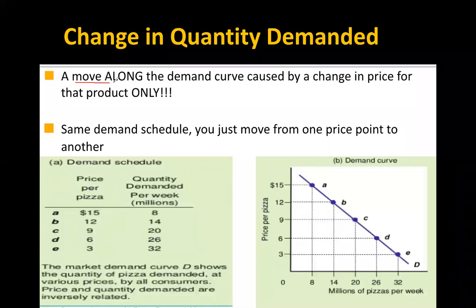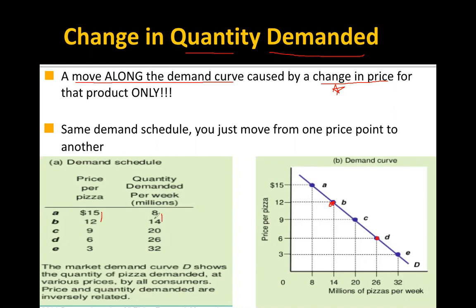A change in quantity demanded is a move along the demand curve, and the only thing changing is price. You have the same demand schedule — all you are doing is moving from one price point to another. When you move from point B to D, or A to C, or C to B — when those prices change, if you raise your prices or put something on sale, that's a change in quantity demanded. Moving from one point to another on the same curve is a change in quantity demanded.